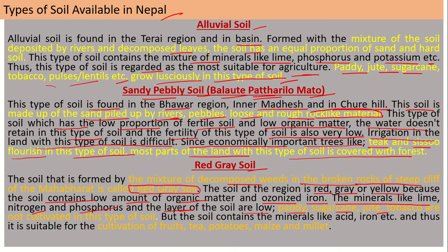Paddy, sugarcane, jute, and tobacco are not cultivated in this type of soil. But the soil contains minerals like acid and iron, and thus it is suitable for the cultivation of fruits, tea, potato, maize, and millet.